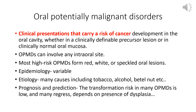OPMDs may or may not be associated with epithelial dysplasia. Regarding etiology, tobacco use such as smoking or chewing tobacco and alcohol consumption are associated with some leukoplakias. Use of betel nut or areca nut with or without tobacco is known to cause oral submucosal fibrosis. Many cases have no known etiological factors, and in some cases infection with high-risk HPV may be found, though its role in transformation to squamous cell carcinoma has not been definitively determined.